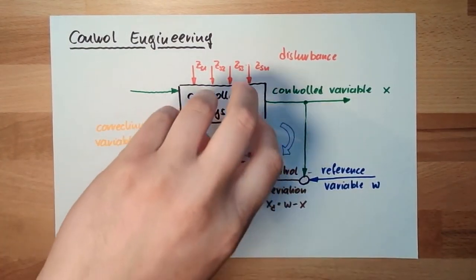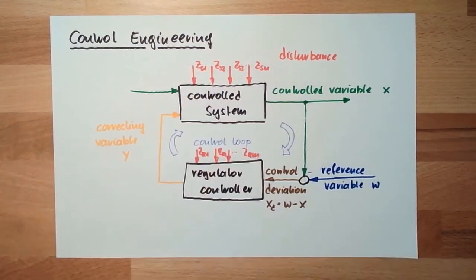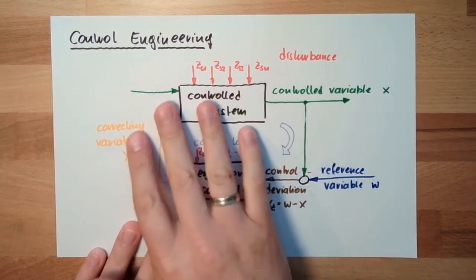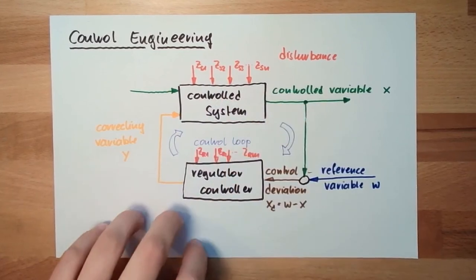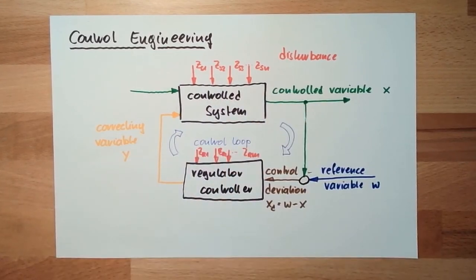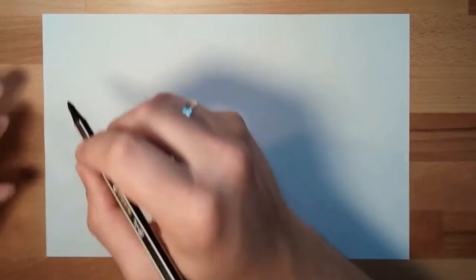So there are a lot of control systems. For instance, whenever I draw something, I have one special control system in mind. And this is a process, process control system. So some chemical process or whatever. This is one big point, process control systems.